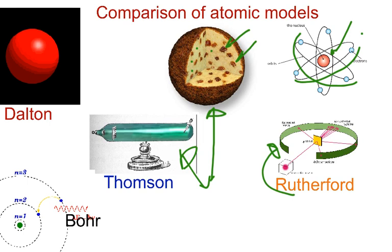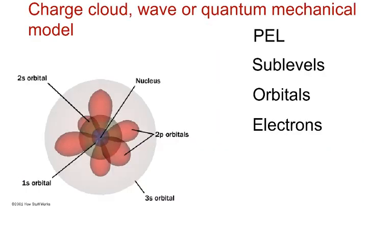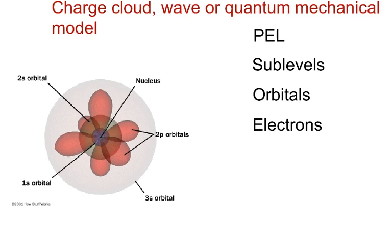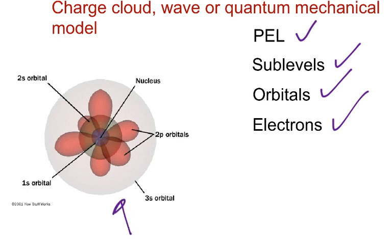What we're going to do after we finish Bohr is go to the current model of the atom, which is called the charge cloud, wave, or quantum mechanical model. There are a couple of different names, but they all represent the same thing. This model is a bit more complex than the others because we run into a new term called principal energy levels. The principal energy levels contain sub-levels, the sub-levels contain orbitals, and the orbitals contain electrons. Don't panic — we'll take it part by part and put it together. All these different things are contained in the atom, and if you look at this picture right over here, it kind of looks complex, but we'll work through it.